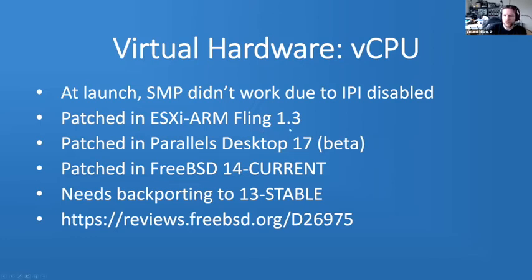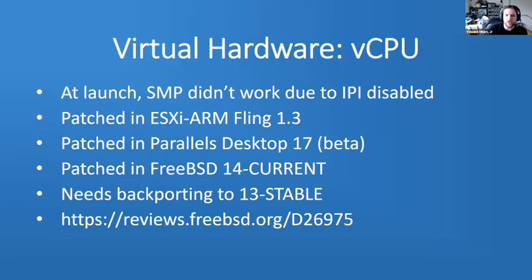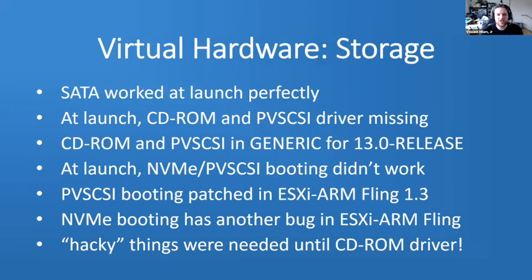Patches can be applied to both the hypervisor and the OS to disambiguate the state of that register. The patch has since been applied to ESXi ARM Fling version 1.3, and is currently in testing with Parallels Desktop 17. The patch is in FreeBSD-CURRENT/14, but as of last night had not yet been backported to 13 — that's review D26975, just one line of code. This has been the number one issue people notice: the boot process stalls waiting for that interrupt, or users need to drop to one virtual CPU to complete booting.